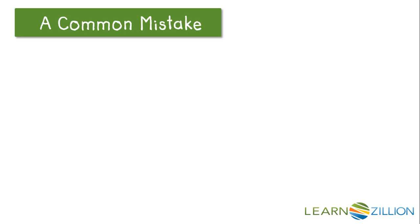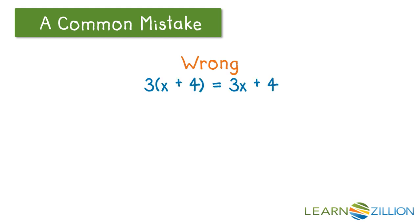Let's take a look at a common mistake that students make. A student may incorrectly simplify 3 times the quantity x plus 4 as 3x plus 4 because they did not distribute to both terms inside the parentheses.